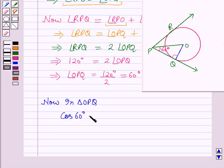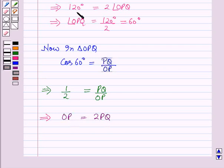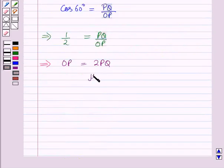Now in triangle OQP, cosine of angle OPQ is equal to PQ by OP, which further implies on cross-multiplying OP is equal to 2 into PQ. In the question we have to prove OP is equal to 2 into PQ, hence proved.